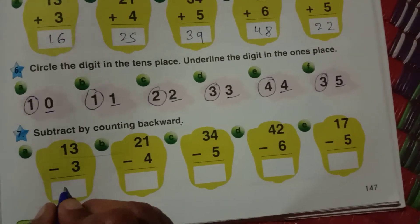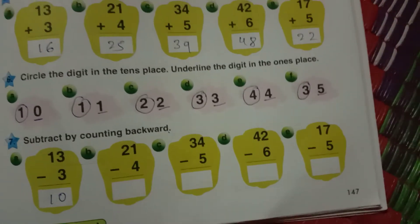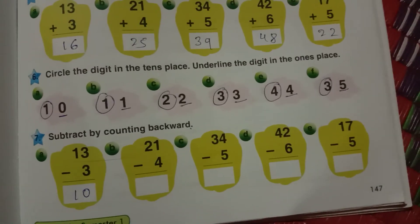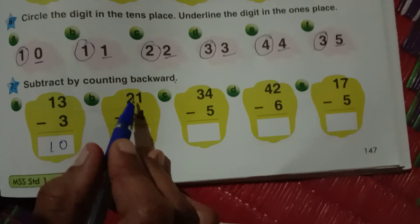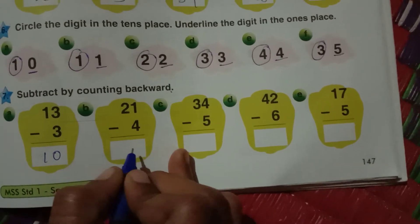Subtract by counting backward. 13 minus 3 is 10. 21 minus 4, how much? Next, 21 minus 4 is 17.